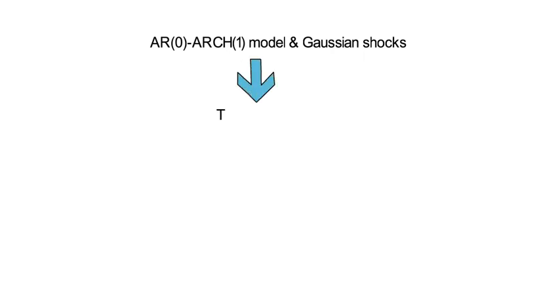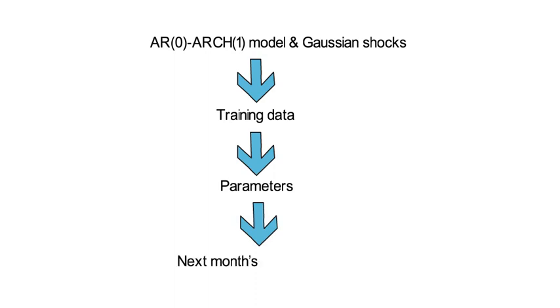Then we collect some training data that covers past data up to the current month. We use that training data to estimate the parameters of that ARCH(1) model. Next, we use the estimated ARCH(1) model to forecast next month's return variance.